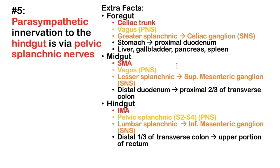For innervation: the vagus nerve provides most parasympathetic innervation for the foregut and midgut. In the hindgut, the pelvic splanchnic nerves from S2 to S4 are responsible for parasympathetics. For sympathetics: greater splanchnic nerves synapse at the celiac ganglion (foregut), lesser splanchnic nerves go to the superior mesenteric ganglion (midgut), and lumbar splanchnic nerves go to the inferior mesenteric ganglion (hindgut).